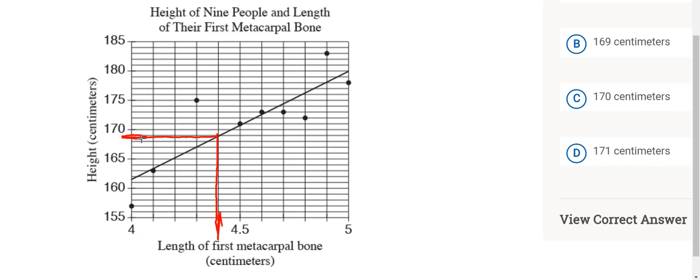Now each of these marks on the y-axis looks like it's going up by one, so I'm thinking that looks like it's about at 169. So 4.45, according to the line predicted—169.